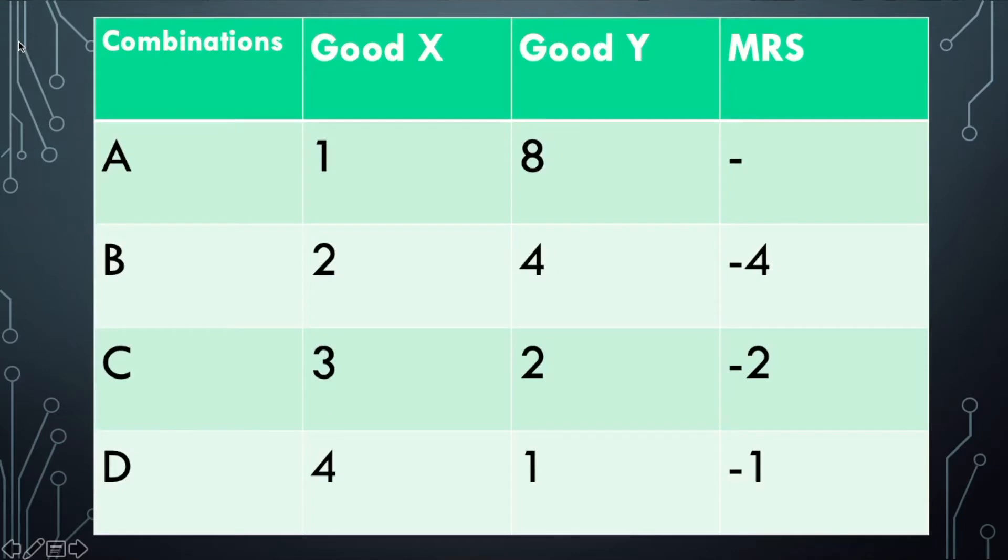In the table, as we go through the combinations A to D, we can see that the consumer is willing to sacrifice only less and less units of Y to obtain additional units of X.